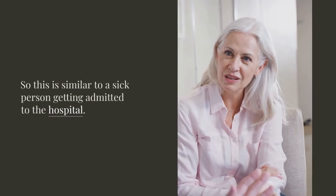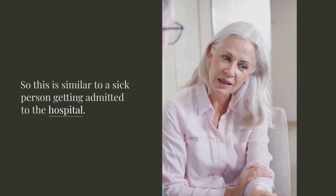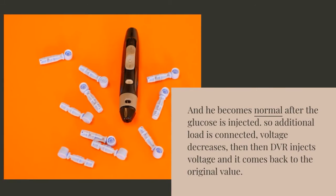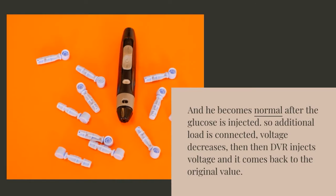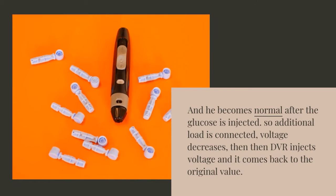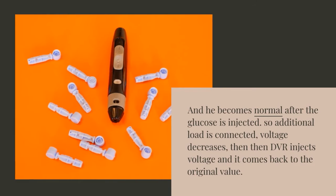So this is similar to a sick person getting admitted to the hospital. Glucose drip is given for 4 hours and he becomes normal after the glucose is injected. So additional load is connected, voltage decreases. Then DVR injects voltage and it comes back to the original value.